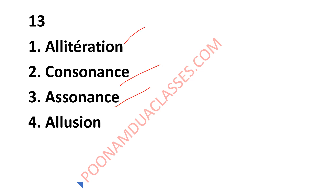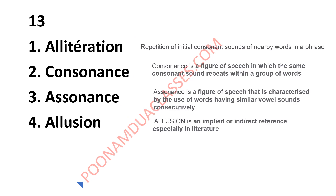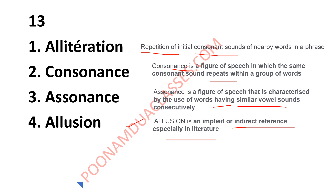Alliteration, consonance, assonance, and allusion were matched by their definitions. Alliteration is the repetition of initial consonant sounds. Consonance is the figure of speech in which the same consonant sound repeats within a group of words. Assonance is the figure of speech characterized by the use of words having a similar vowel sound. An allusion is an implied or indirect reference, especially in literature — for example, calling someone the Shakespeare of our class.